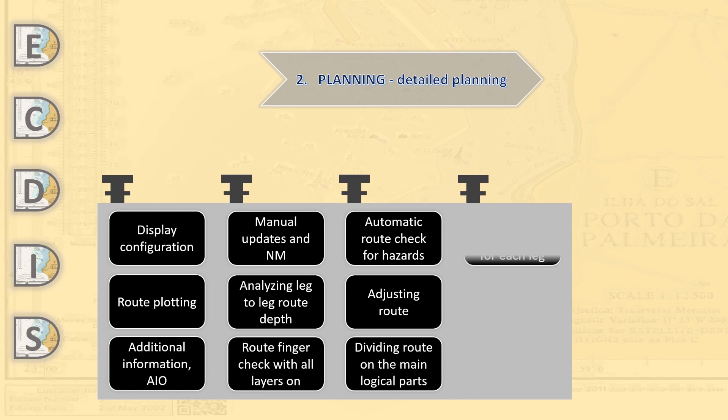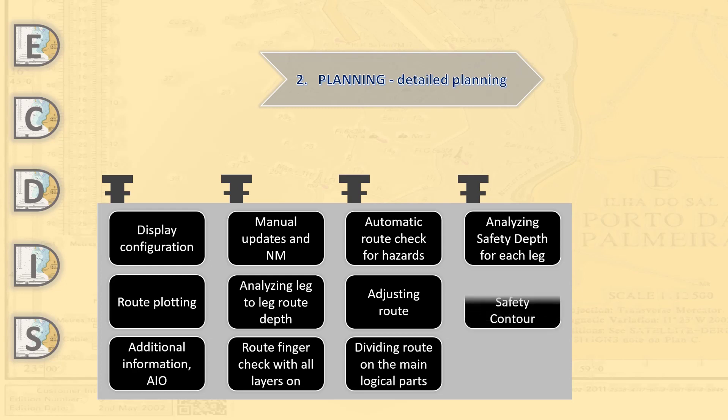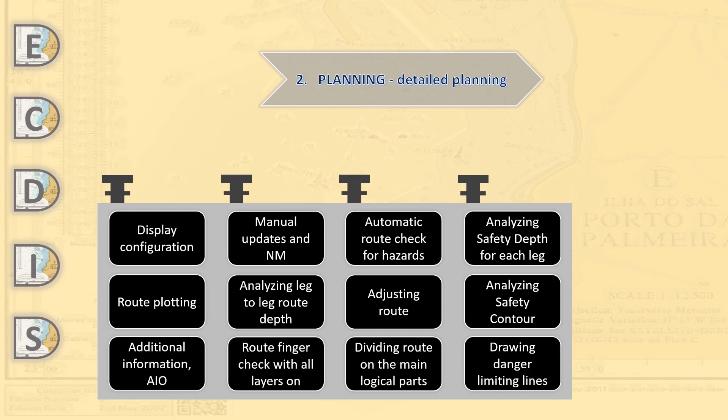Here we analyze the safety depth for each leg. Then we analyze the safety contour. If there are zones where we are crossing the safety contour and settings cannot help us adjust the appropriate safety contour to avoid crossing, we have to draw danger limiting lines or no-go areas.